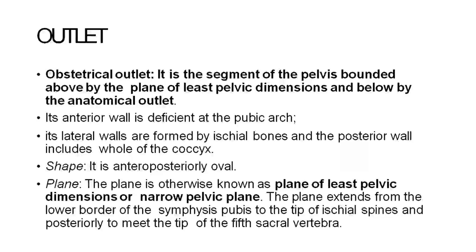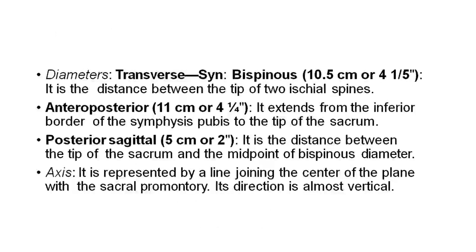The plane of the outlet, otherwise known as the plane of least pelvic dimensions or narrowest pelvic plane, extends from the lower border of the symphysis pubis to the tip of the ischial spines and posteriorly to the tip of the fifth sacral vertebra. Diameters: Transverse, otherwise known as the bispinous diameter, is 11 cm — the distance between the tips of the two ischial spines. The anteroposterior extends from the inferior border of the symphysis pubis to the tip of the sacrum. Posterior sagittal is 5 cm — the distance between the tip of the sacrum and the midpoint of the bispinous diameter.